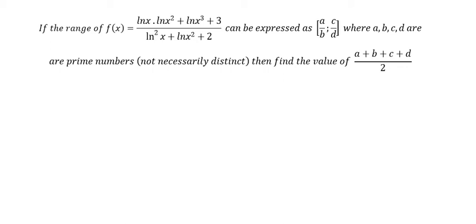Hello everybody. Today I will talk about calculus. The topic is about the range of the function f(x) = ln(x) · ln(x)² + ln(x)³ + 3, over ln(x)² + ln(x) to the power of 2 inside ln(x), plus 2. This can be expressed as a/b and c/d where a, b, c, d are integers, not necessarily distinct. Then find the value of (a + b + c + d) / 2.